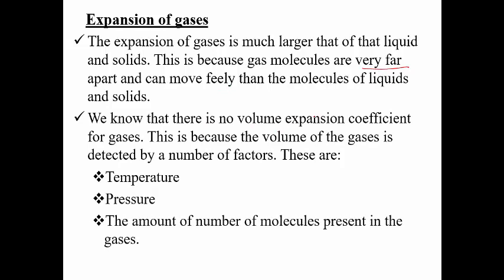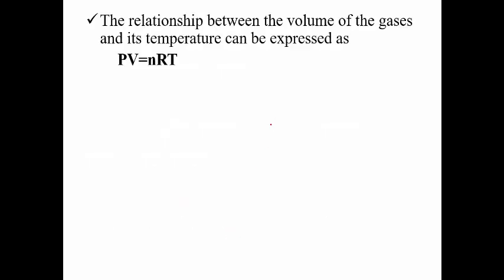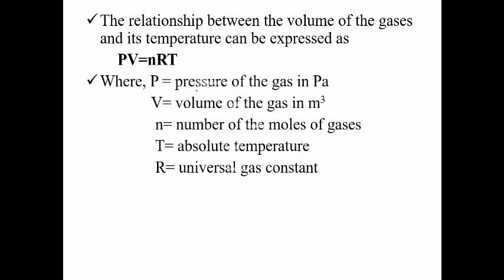There is no simple volume expansion coefficient for gases. This is because the volume of gases is determined by a number of factors: temperature, pressure, and the amount or number of molecules present in the gas. Therefore, we use the relationship between the volume of the gas and its temperature, which can be written as PV = NRT. P stands for pressure in Pascal, V is the volume in cubic meters, N is the number of moles, and R is the universal gas constant equal to 8.31 J/mol·K.